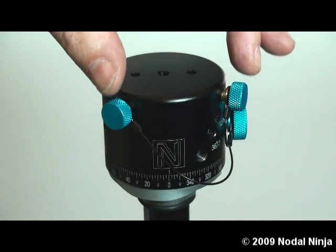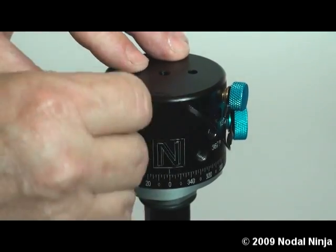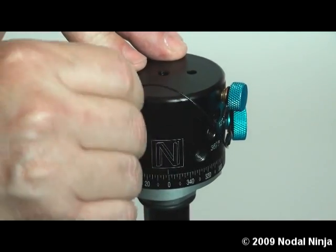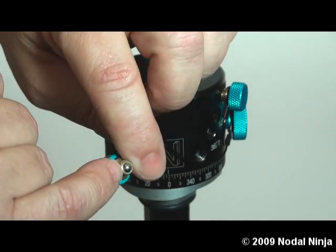And then we have two detent plunger knobs. Now these little knobs are what give you the click stops. They have a spring-loaded ball bearing built right into the knob itself.